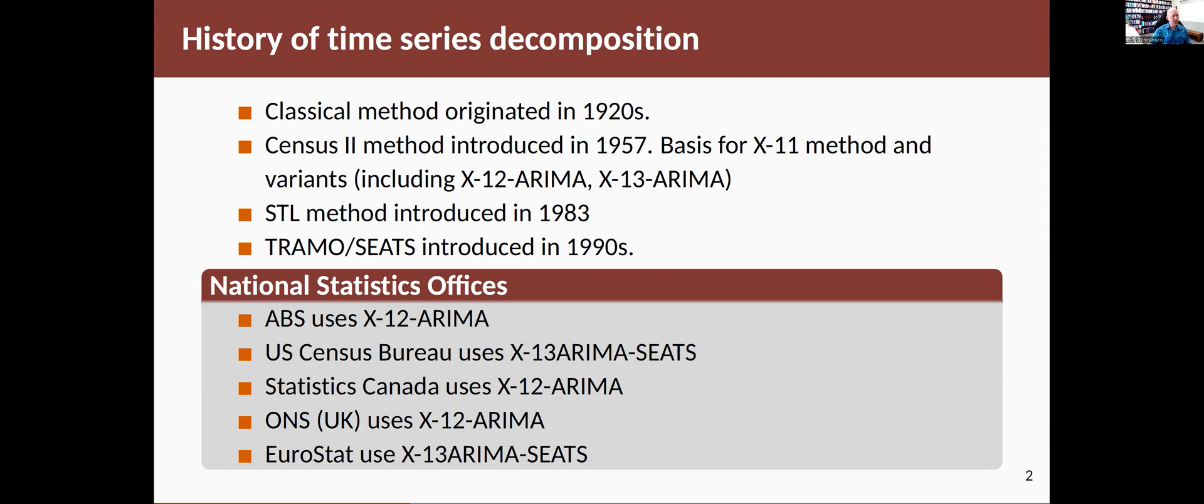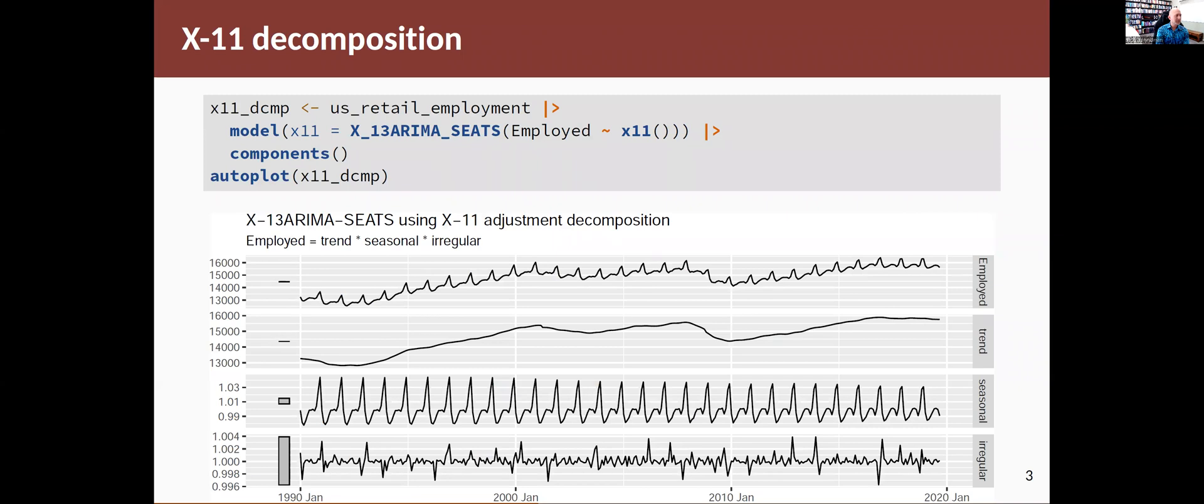I'm going to show you how you can do this type of decomposition using the Fable packages. Let's start with X11 decomposition. The process is exactly the same as what you've seen already using STL but instead of STL we use this function X13 ARIMA SEATS. Within that function you have to say what type of decomposition you use and if you want X11 you just say you want to have the X11 decomposition. So you go employed, tilde or modeled as X11. Otherwise it's exactly the same.